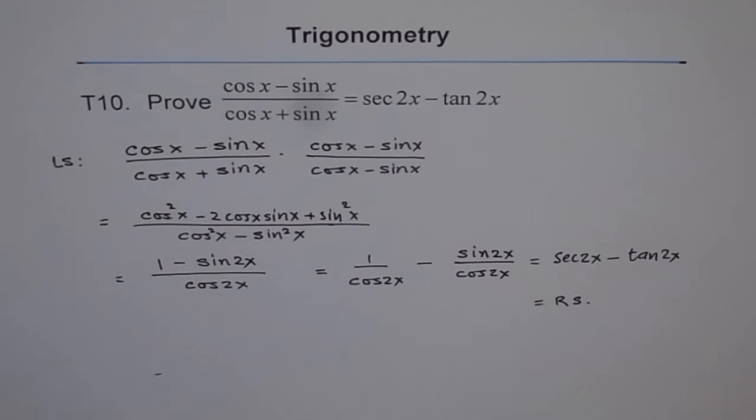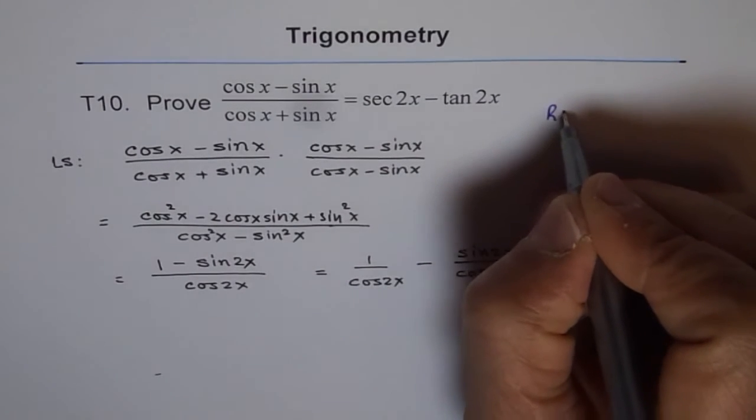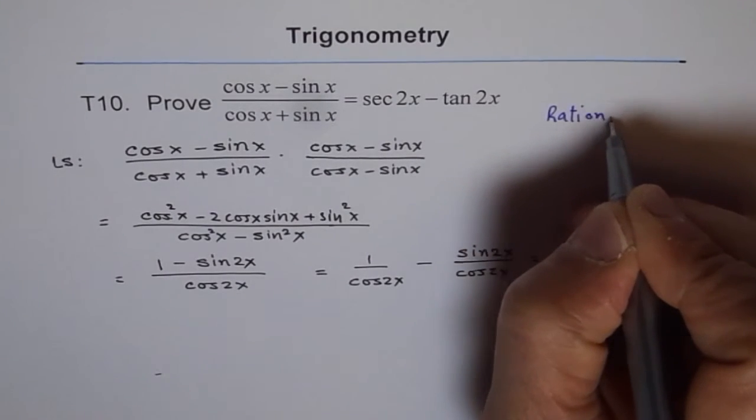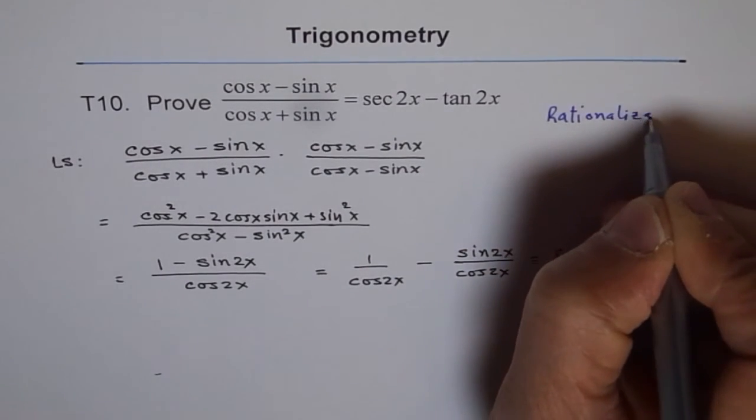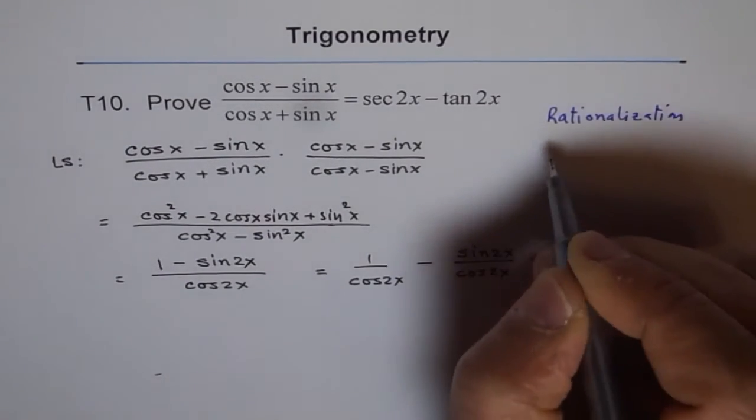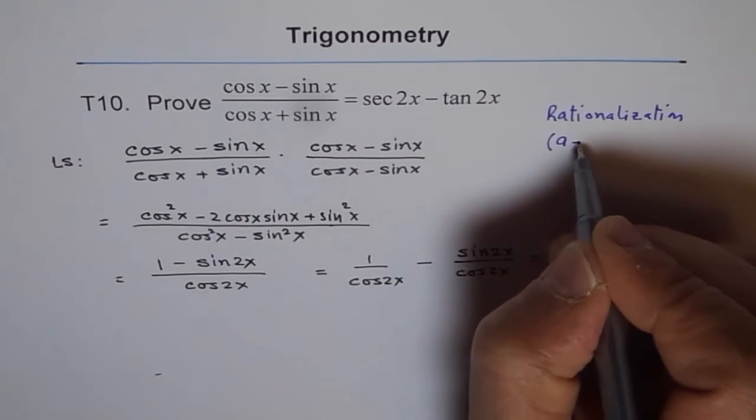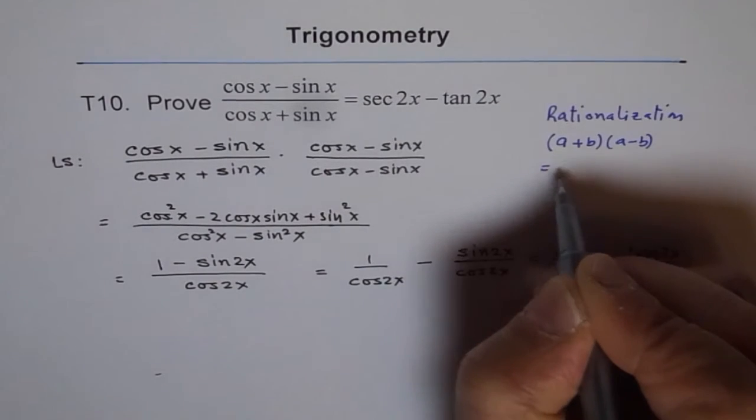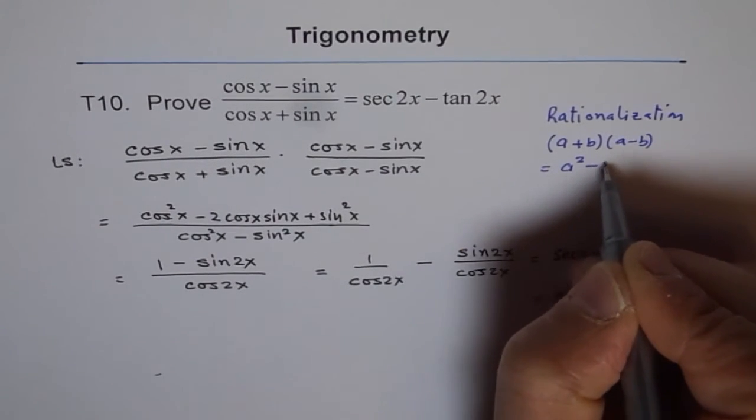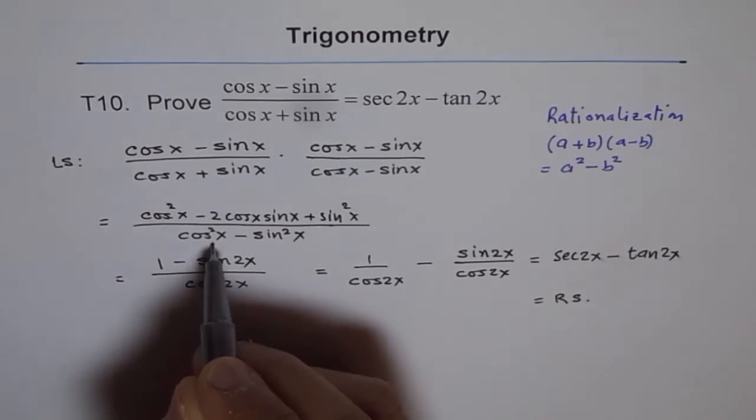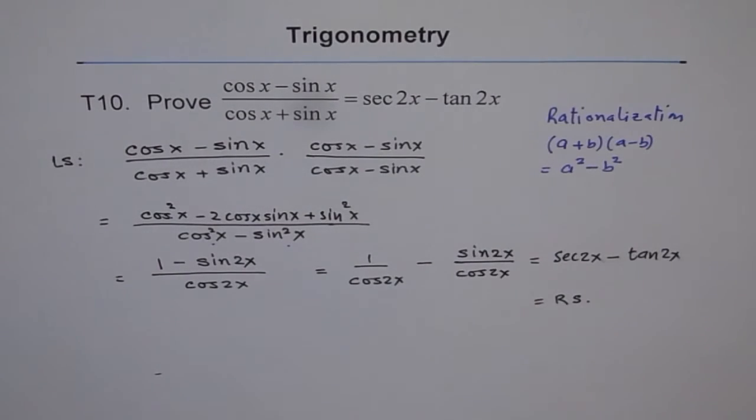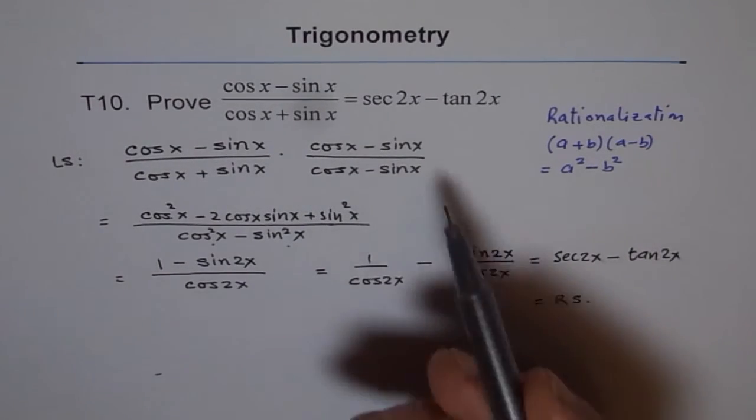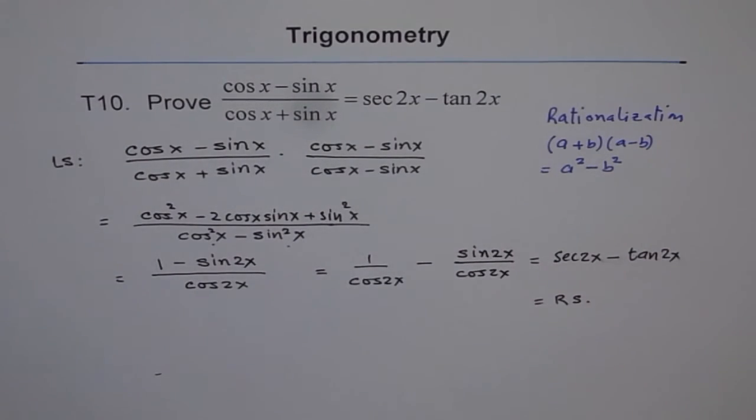And what did we do? First step, we rationalized. So there we use the property a plus b times a minus b equals a square minus b square. Do you see that part? And then straightforward. So that's how you do it. Thank you.